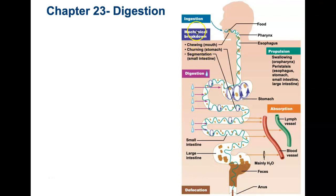One of the other things we're going to talk about is mechanical digestion and chemical digestion. When we get to the mouth, we'll talk about how your teeth are breaking down the food mechanically into smaller parts, tearing it apart. But you also have salivary glands depositing enzymes that are going to chemically break down the food. The same thing is going to happen in the stomach — we have both chemical and mechanical digestion.